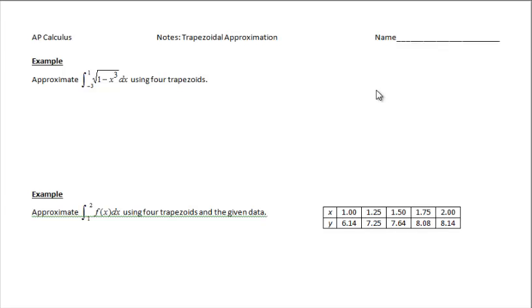We're going to continue to approximate area between a curve and the x-axis. We're going to switch gears. Instead of using rectangles to help us approximate, we're going to use trapezoids. So it would be helpful for us to have the area formula for a trapezoid. Let's document it. It's the height of the trapezoid times the sum of the bases divided by 2.